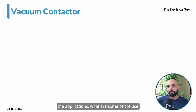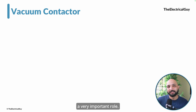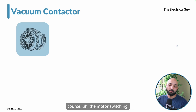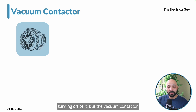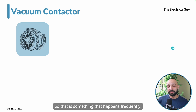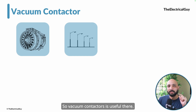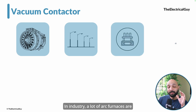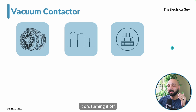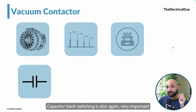Now let's talk about applications. The major application is motor switching — not just turning the motor on and off, but also reversing the direction of rotation, which happens frequently. Vacuum contactors are also used in power distribution, for example controlling street lights, which require many switching operations daily. In industry, arc furnaces need frequent switching, and vacuum contactors are well suited for that as well.